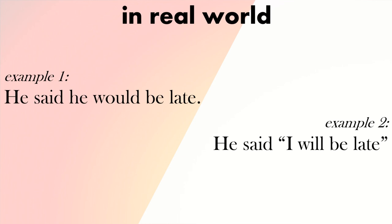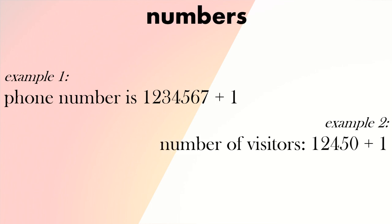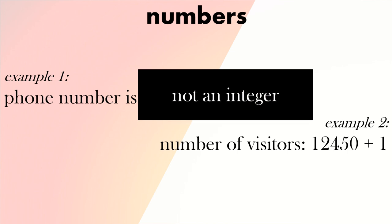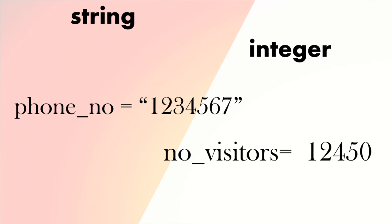Here we've got 'phone number is 1234567' — those are digits, but we wouldn't really use phone numbers in maths. The second example is 'number of visitors' — that's a count, so it would add one every time there's a visitor. Phone number is not an integer whereas number of visitors is an integer. So phone number would be a string, and number of visitors would be an integer.